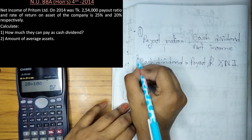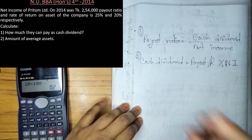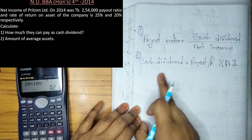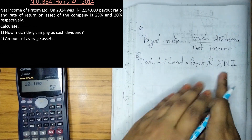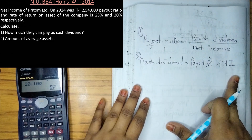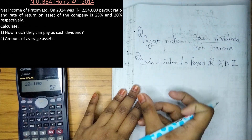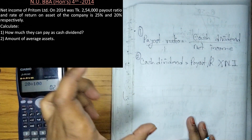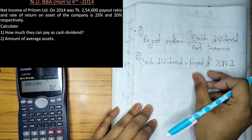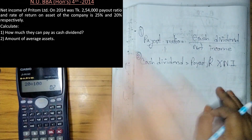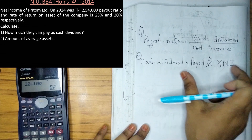This is the second rule: payout ratio multiplied by net income equals cash dividend. Cash dividend equals net income multiplied by payout ratio. This is the net income formula we will use.